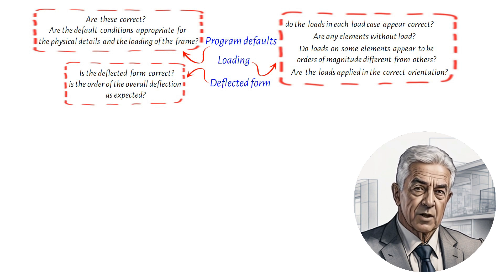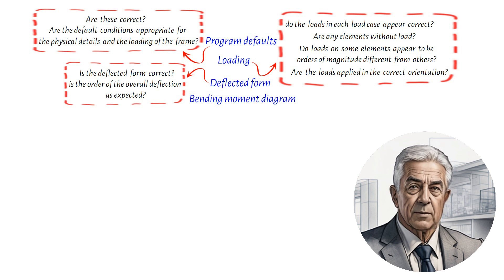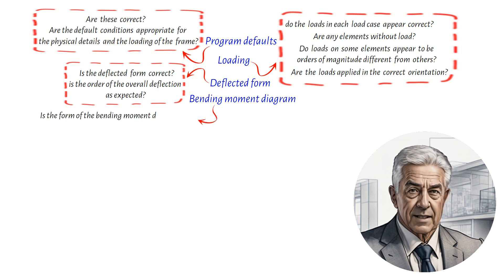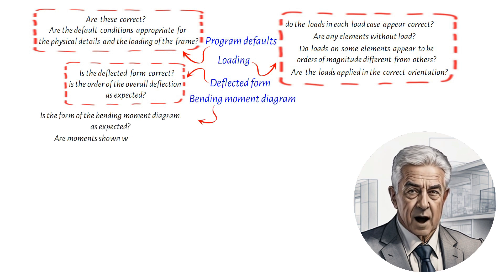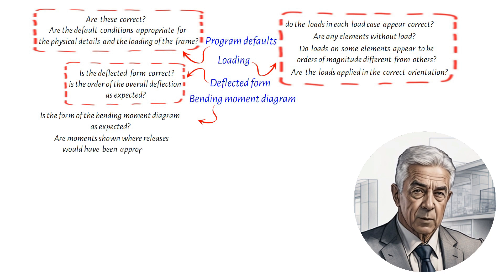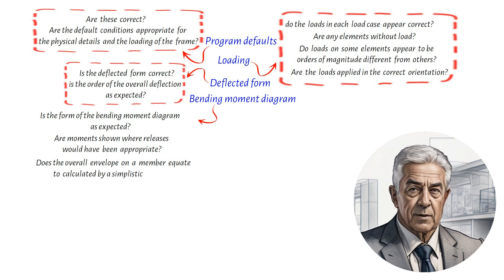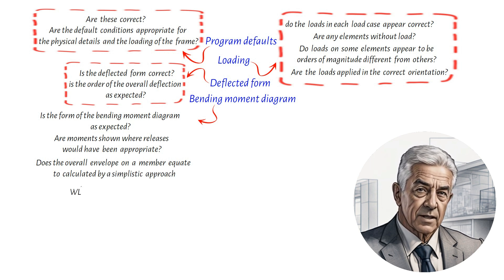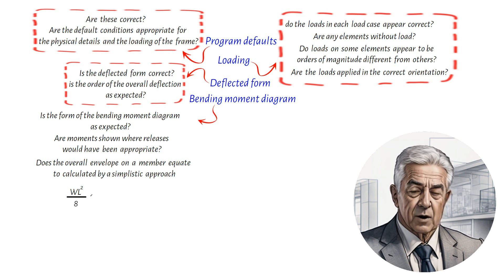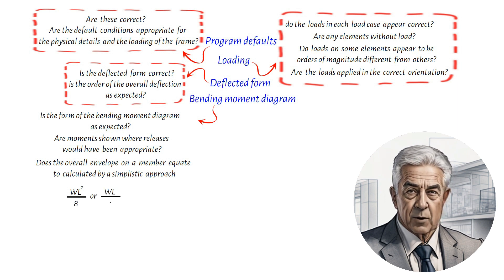Turning our attention to the bending moment diagram, does it resemble what you expected? Are there moments shown where releases would have been more appropriate? And does the overall envelope on a member align with a simple approach, like uniformly distributed load times length squared over 8, or distributed load times length over 4?